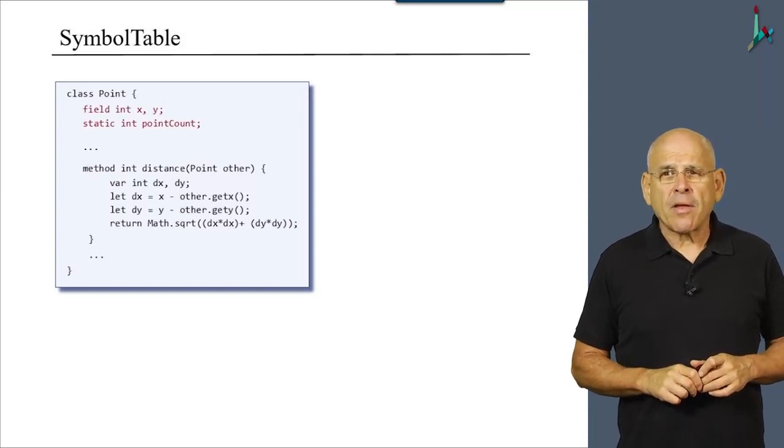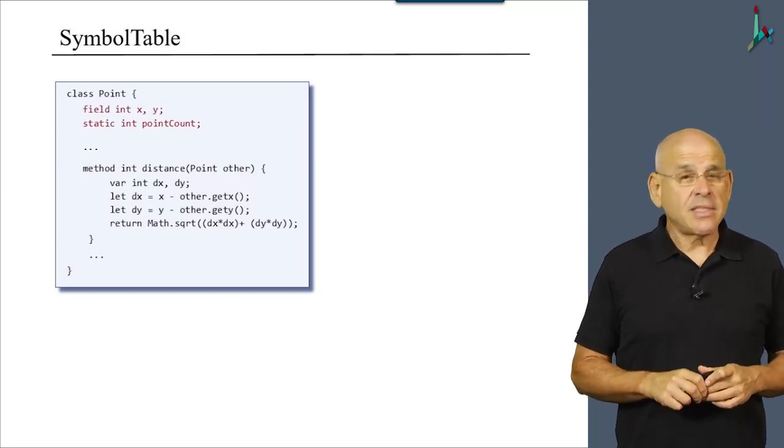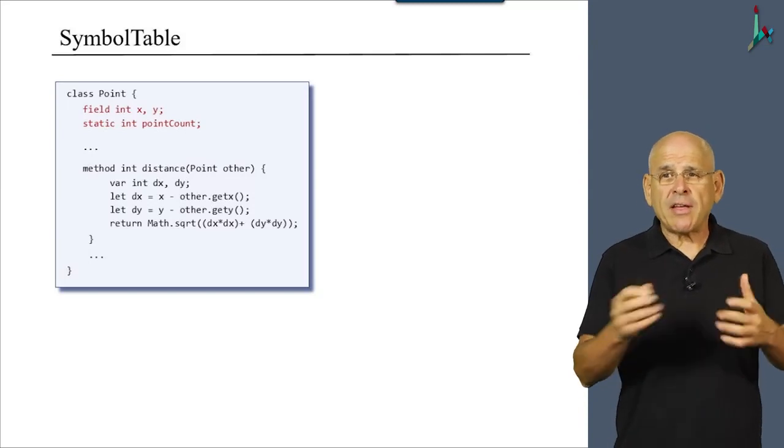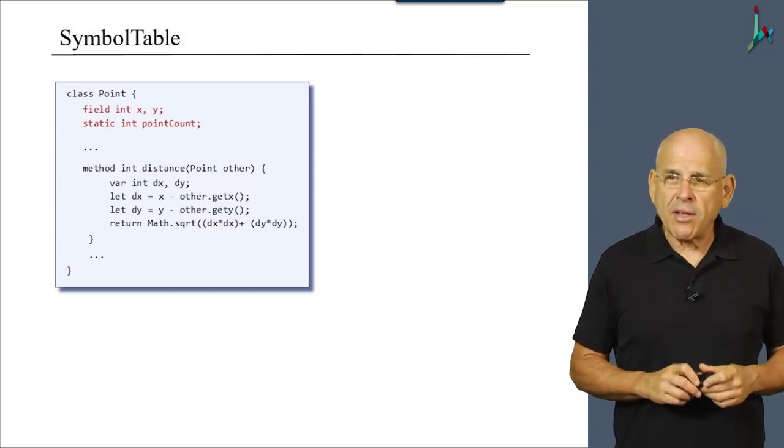First of all, we have field variables and static variables. X, Y are fields, and there's only one static variable, point count.